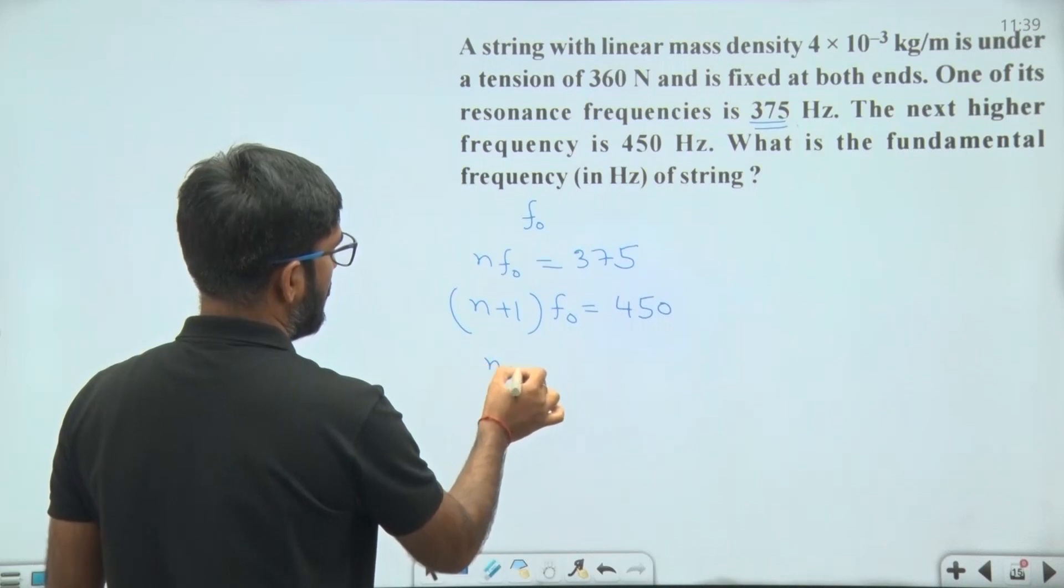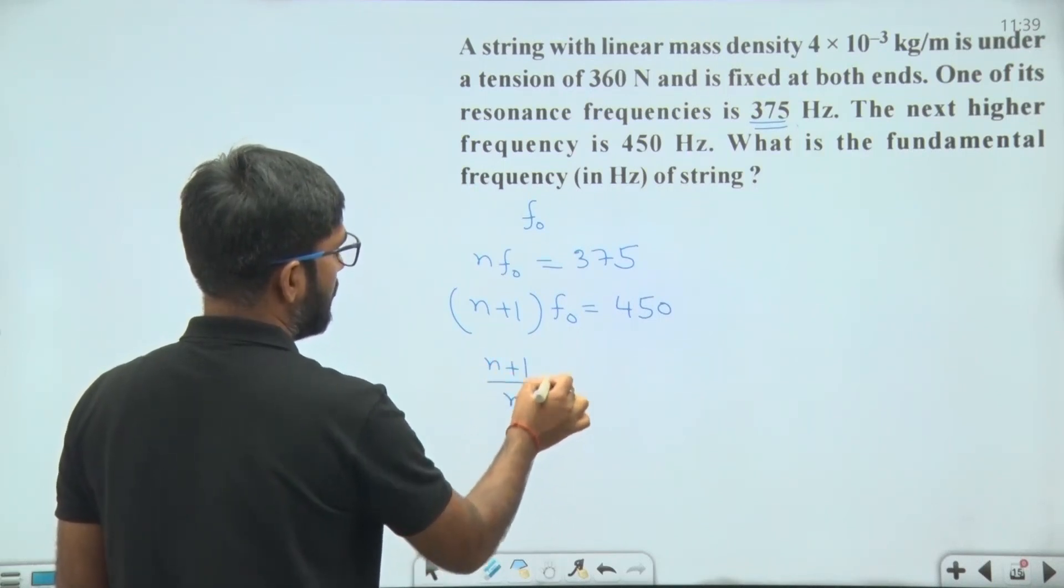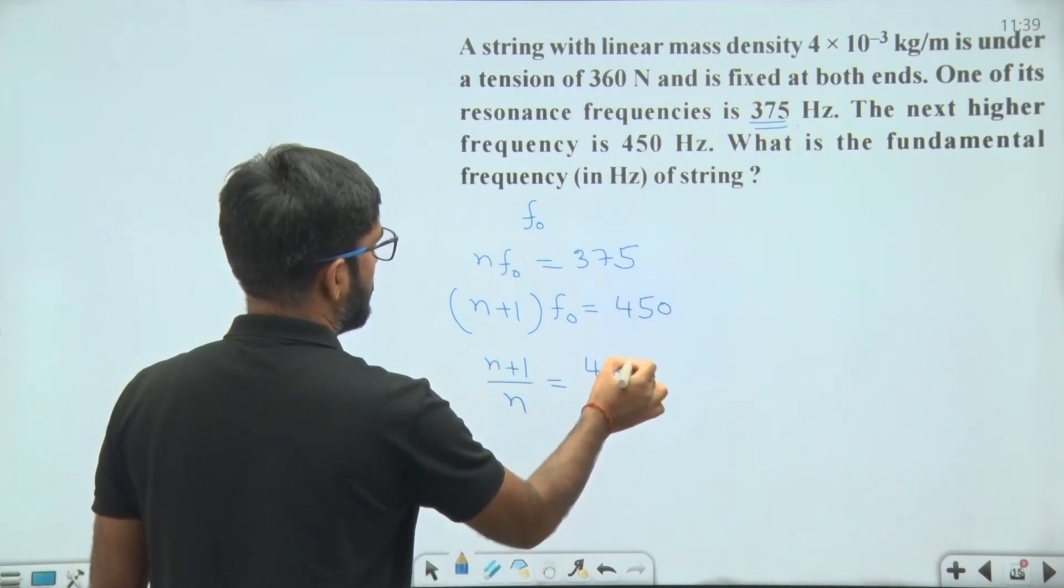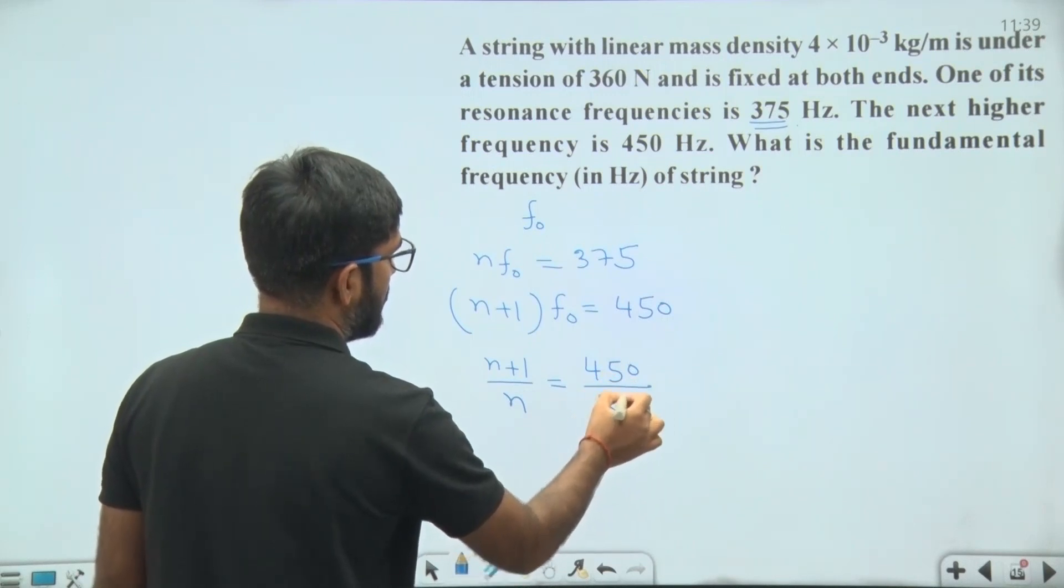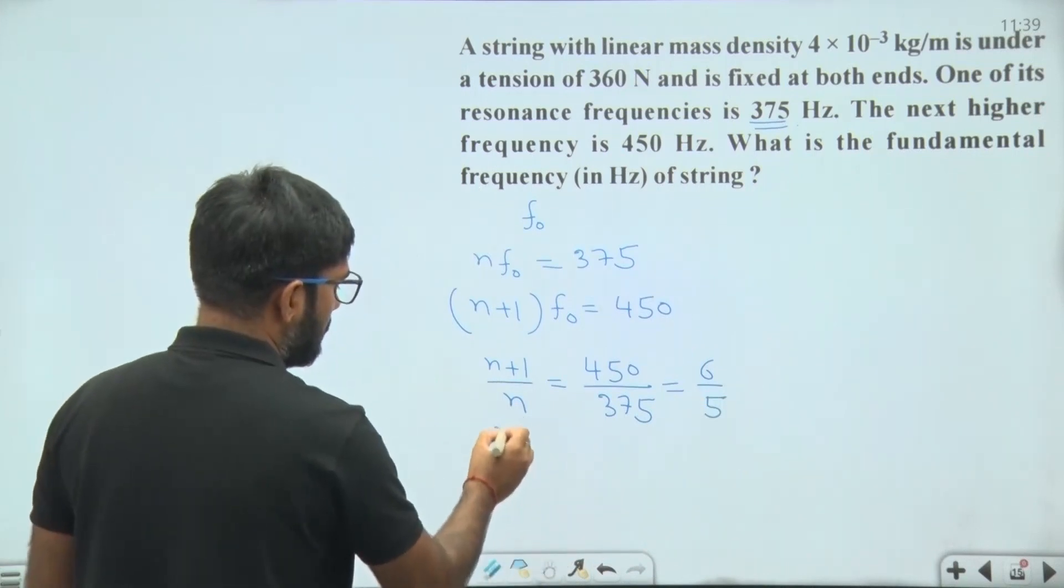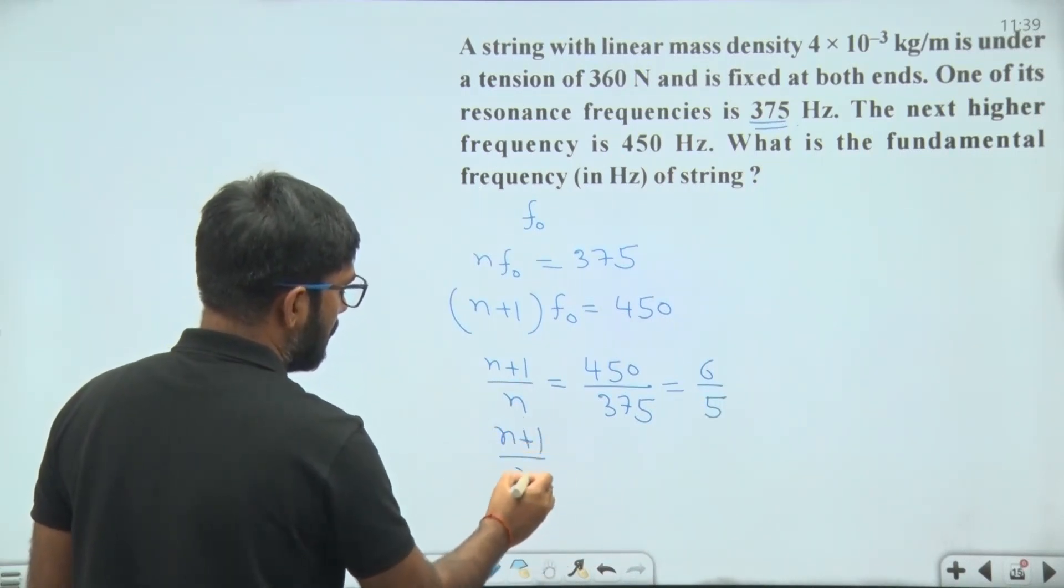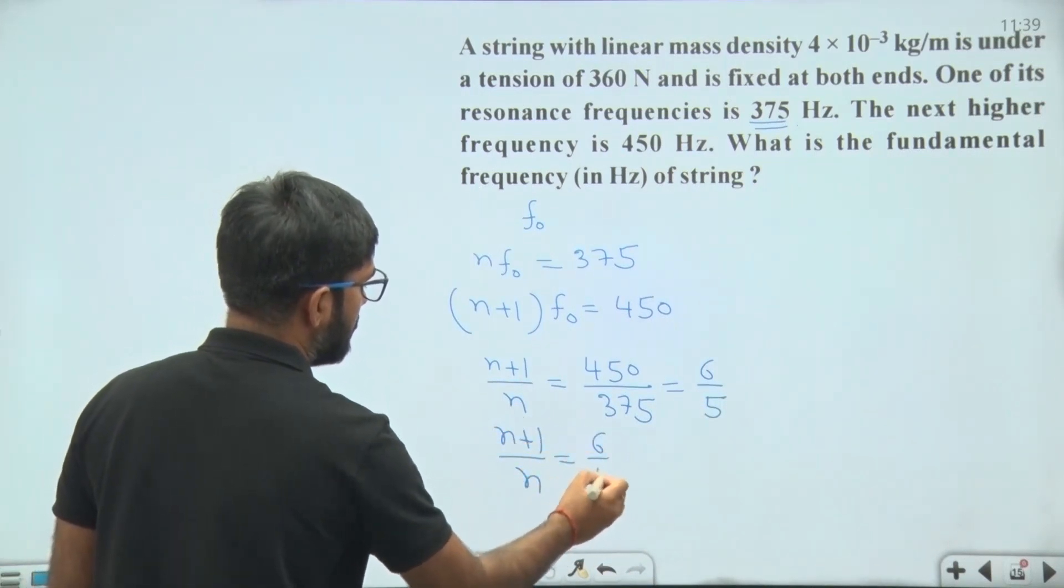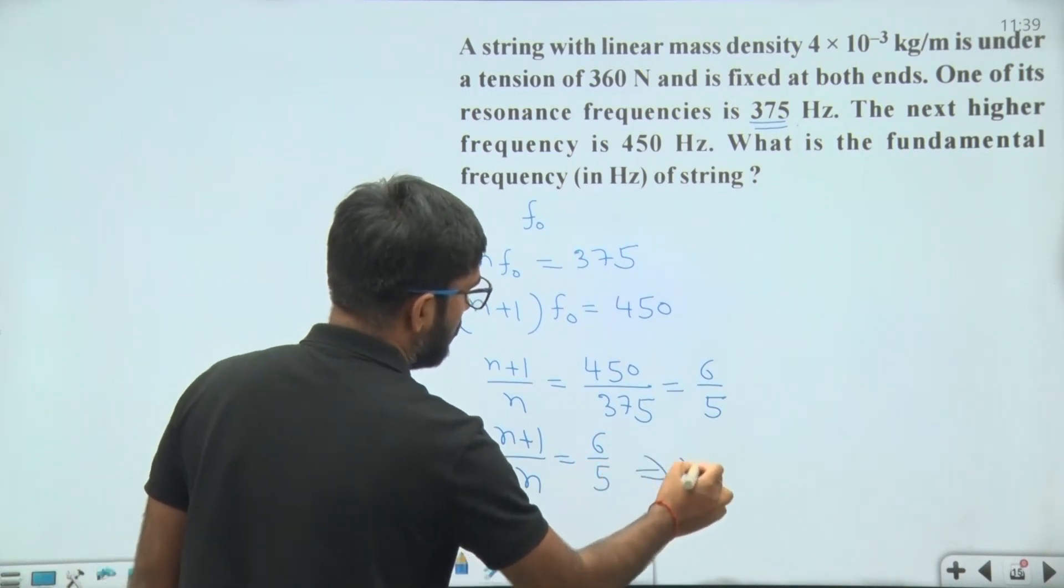On solving this, we get (n+1)/n = 6/5, which gives n = 5.